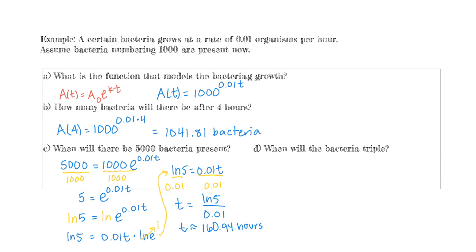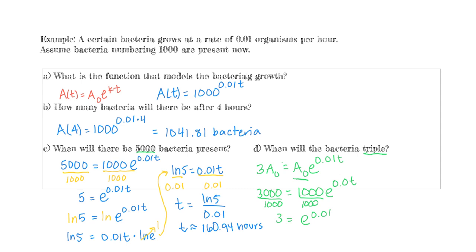The last question asks when will the bacteria triple. So instead of 5000, we're asking when will it be 3000. The tripled amount is three times A naught, which in our example is 3000. But the key point is we don't actually need this initial amount to solve the problem, because when we divide both sides by 1000, we're just left with 3. You could also see this by dividing both sides by A naught — the A noughts cancel and you're left with 3 on the left-hand side.